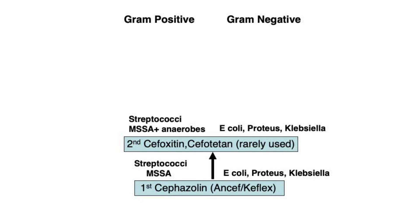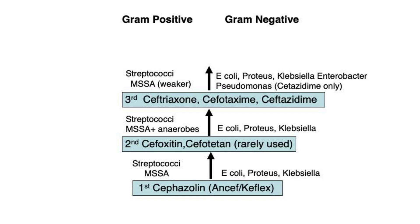Cefoxitin is recommended for treatment of pelvic inflammatory disease. The third-generation cephalosporins, specifically ceftriaxone with its once-per-day dosing, is now the workhorse antibiotic recommended for the treatment of all four of the most common anatomic infections: pneumonia, meningitis, cellulitis, and pyelonephritis. Third-generation cephalosporins have enhanced gram-negative coverage and cover streptococci as well. As compared to first-generation cephalosporins, their ability to kill MSSA is less effective; therefore, in documented MSSA infections, they are not recommended.